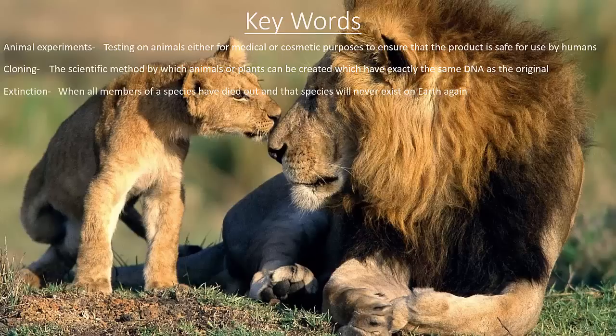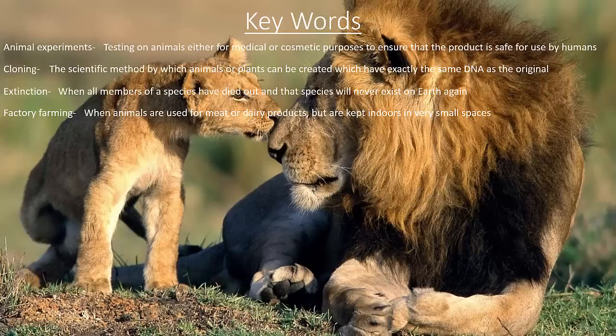Extinction — when all members of a species have died out and that species will never exist on earth again. Factory Farming — when animals are used for meat or dairy products but are kept indoors in very small spaces. Free Range Farming — farming that allows the animals to roam free and behave naturally.